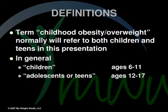Definitions: The term childhood obesity or overweight normally will refer to both children and teens in this presentation. In general, the age range of children is ages 6 to 11 years, and adolescents or teens is ages 12 to 17.